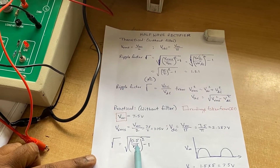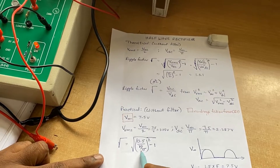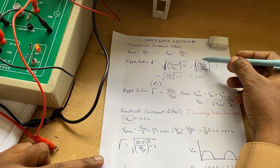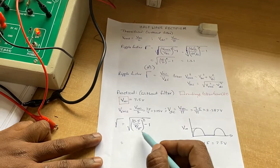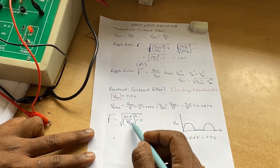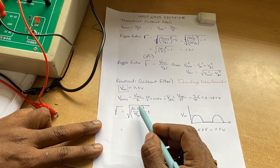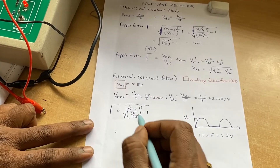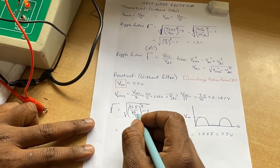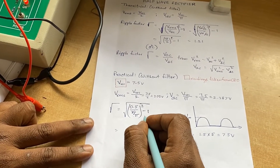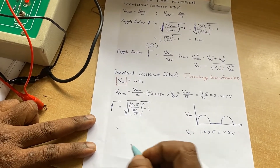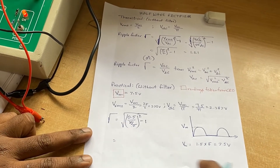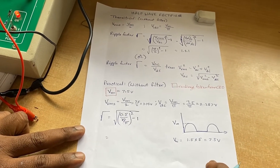To calculate the ripple factor, substitute the values. Vm cancels out and you compute √[(π/2)² − 1], which gives the practical ripple factor value.